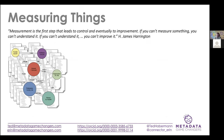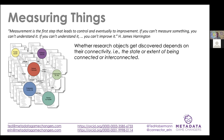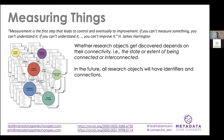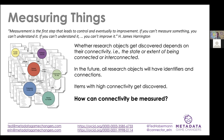Another thing that's really important to me is measuring things. As James Harrington said, 'measurement is the first step that leads to control and eventually to improvement.' If you can't measure something, you can't understand it; if you can't understand it, you can't improve it. Whether research objects get discovered depends on their connectivity — the state or extent of being connected and interconnected. I think in the future, all research objects will have identifiers and connections, and items with high connectivity will get discovered. So how can we measure this connectivity?